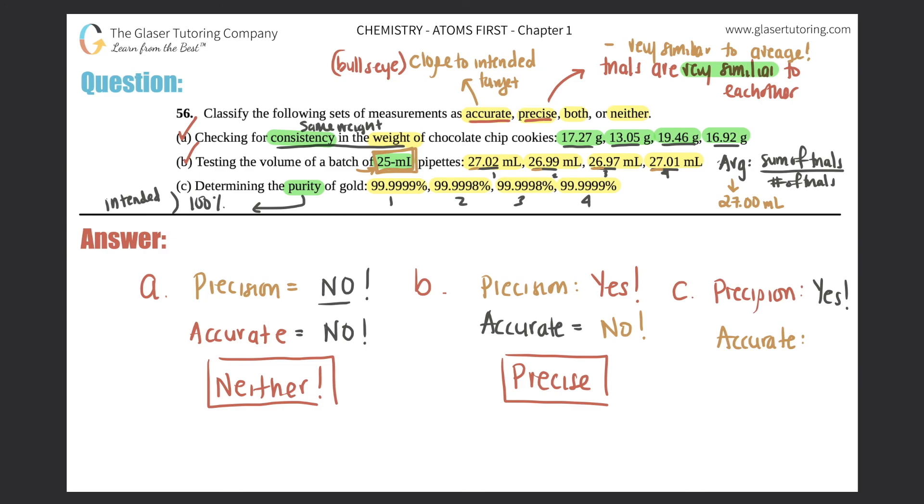Right? If you want a whole substance to be just gold, you want 100% of it to be. So, intended target.